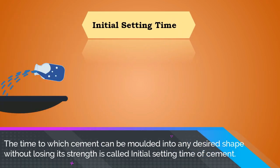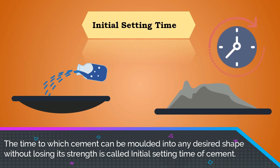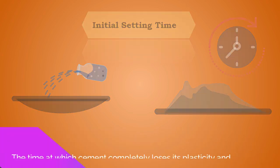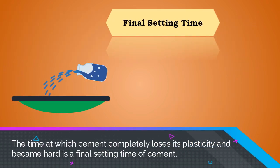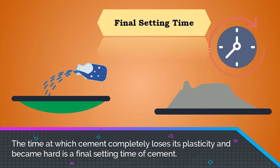The time during which cement can be molded into any desired shape without losing its strength is called the initial setting time of cement. The time at which cement completely loses its plasticity and becomes hard is the final setting time of cement.